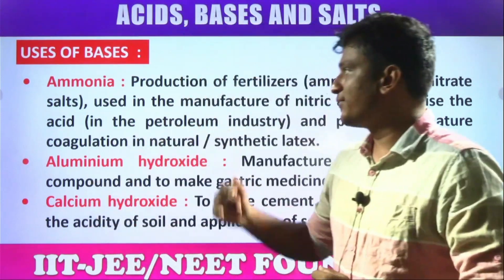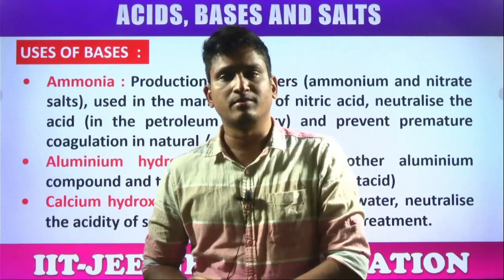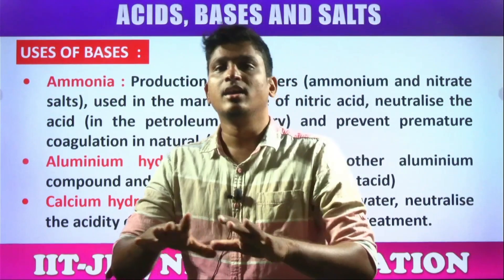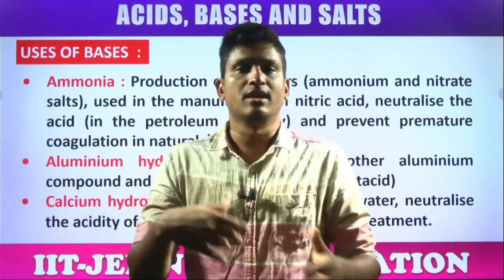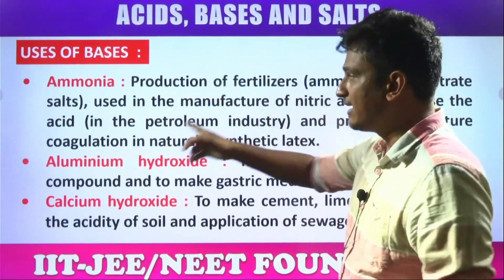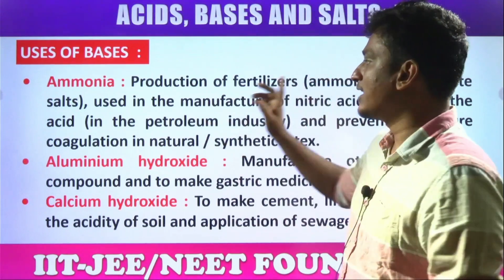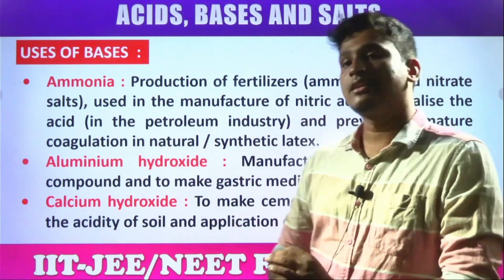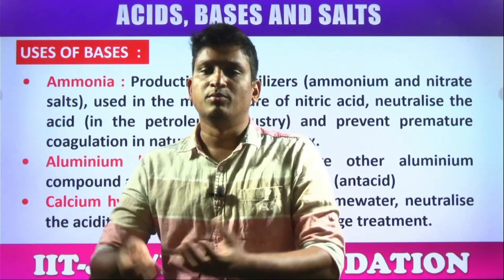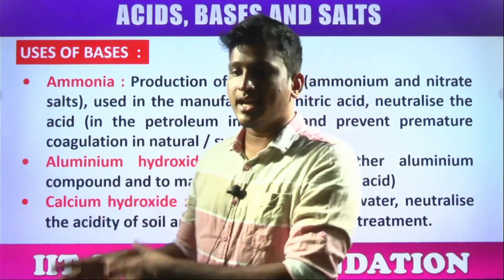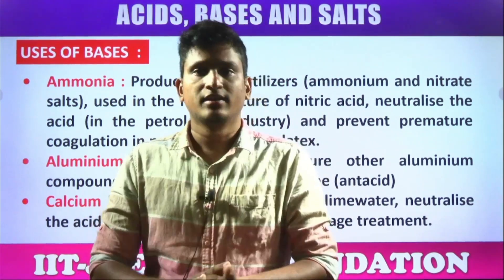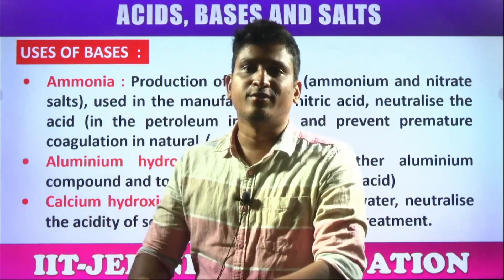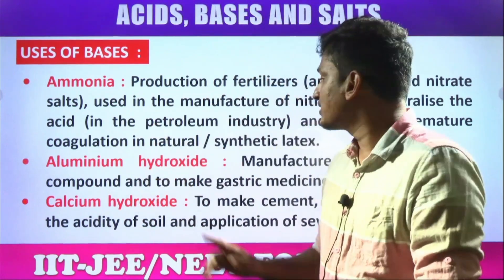Uses of bases: first, ammonia NH₃. The primary use of ammonia is as a fertilizer for plant growth. From ammonia, many other fertilizers can also be synthesized — ammonium phosphates, ammonium sulfates, ammonium chlorides. Ammonia is used in the production of fertilizers and nitrate salts, in the manufacture of nitric acid, for neutralizing acids in the petroleum industry, and to prevent premature coagulation in natural or synthetic latex in the rubber industry.